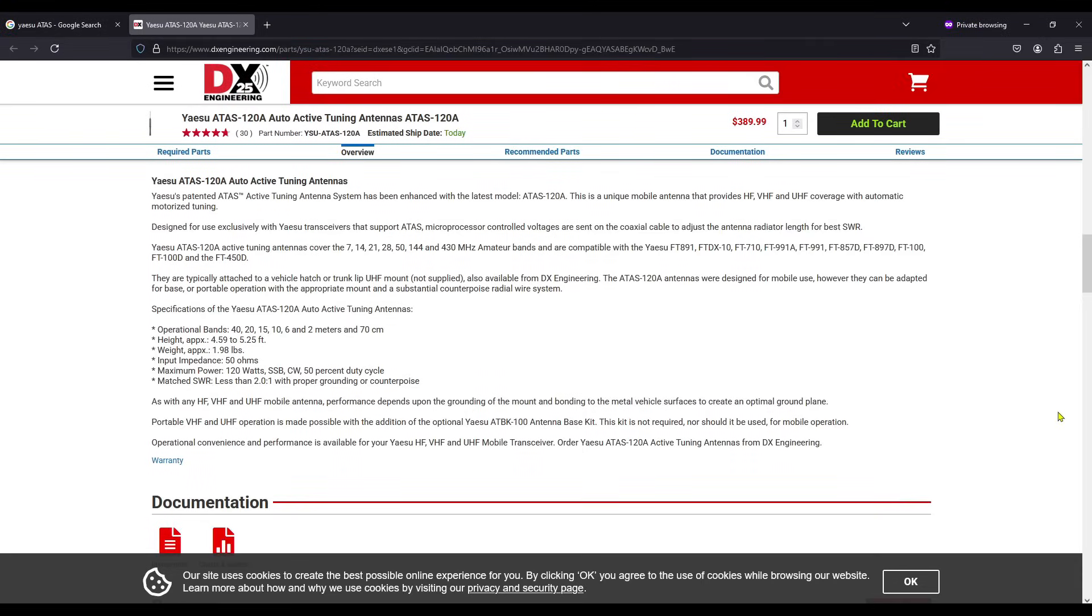Let's take a look at DX Engineering's description of this antenna, so we can talk about it a little bit more. So I'm not going to go through all of this, because it's a whole lot of words. But what's really nice about the antennas, and this is the Model 120A, and they have a couple of different models. And the 120, I believe, is the power rating. I believe this is maximum power of 120 watts on single sideband CW at a 50% duty cycle. But what I wanted to highlight is that these are designed for mobile use. However, they can be adapted for base or portable operation with the appropriate mount and substantial counterpoise or radial wire system. And that's for that grounding that we talked about. Down here it says that as with any HF VHF or mobile antenna performance depends upon the grounding of the mount and bonding to the metal vehicle surfaces to create an optimal ground plane. And I think it should say sufficient ground plane, because it's not an optimal ground plane when you use a vehicle as your ground.